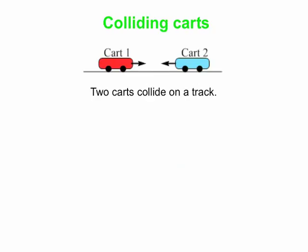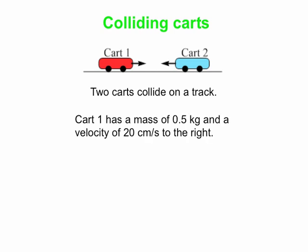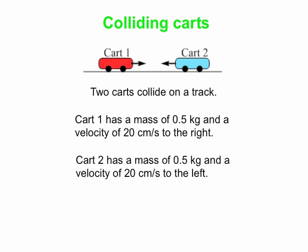Let's apply this to colliding carts. You've probably seen this exact scenario in the lab. Two carts collide on a track. These guys are moving in opposite directions. For instance, the carts are actually identical. Cart 1 has a mass of 500 grams or half a kilogram, and it's got a velocity of 20 centimeters per second to the right. Cart 2 is simply a mirror image of cart 1. Same mass, same speed, and the velocity is directed in the opposite direction to cart 1's velocity.